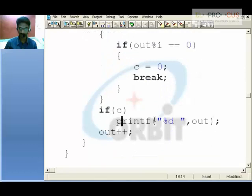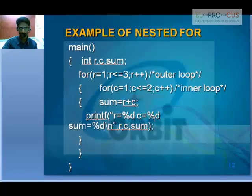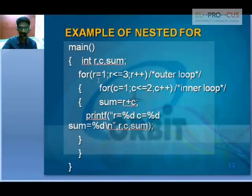The nested for loop example shows a loop in which another loop exists. Likewise, a nested while loop has a while loop in which another while loop exists.